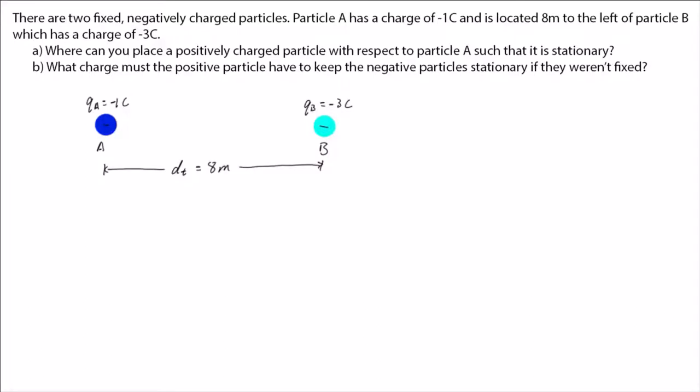We know that positive particles are attracted to negative ones, and so if we place the positive particle to the left of A, it will be pulled to the right by A and B. Thus, it will experience a net force to the right, not 0. Same if we place the positive particle to the right of B. The particle will experience a net force to the left. If we place the positive particle above A and B, then it will be pulled down. Same for placing it below A and B, it would be pulled up.